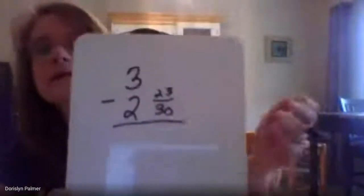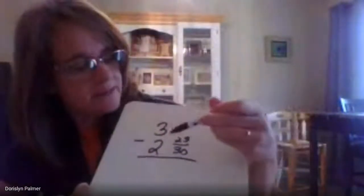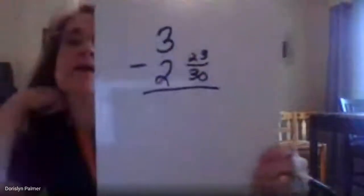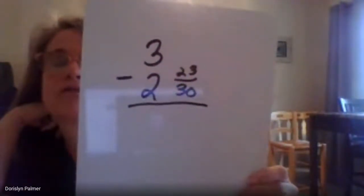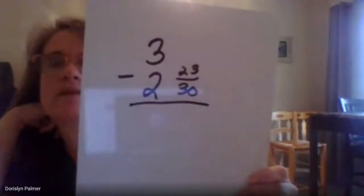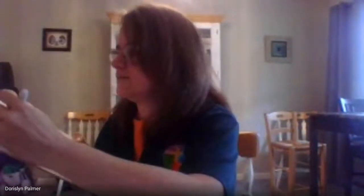So this is what Alex got. He added them together and got two and 23 thirtieths, but they want to know how long the third song is. So he has to take three minutes and subtract two and 23 thirtieths. So he's going to borrow from the three.